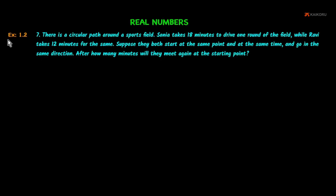Real Numbers Exercise 1.2, problem number 7. There is a circular path around a sports field. Sonia takes 18 minutes to drive one round of the field, while Ravi takes 12 minutes for the same. Suppose they both start at the same point and at the same time and go in the same direction. After how many minutes will they meet again at the starting point?